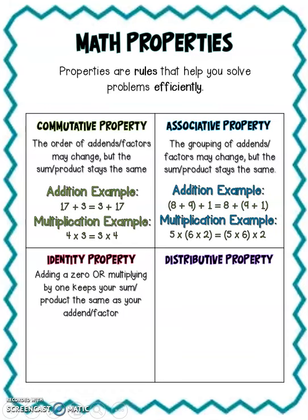Now with the identity property, that's all about keeping your sum or your product the same as your addend or your factor. And the way to do that would be by adding a 0 or multiplying by 1. I like to remember this by thinking that the numbers want to keep their identity or keep their value exactly the same. So in order to do that, they have to add or change by something that's not going to change the number.